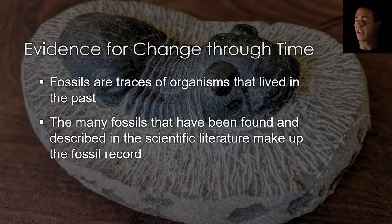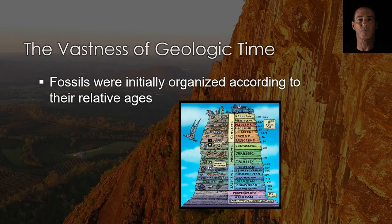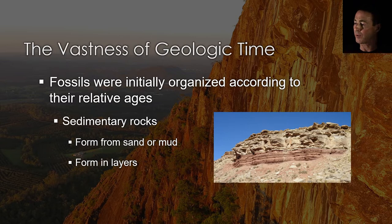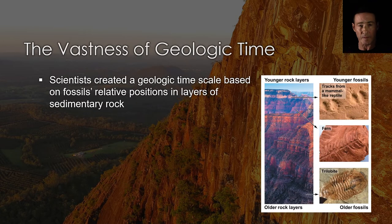Data in the fossil record ultimately came to support the hypothesis that species have changed through time, and data from species living today support the claim that they are modified forms of the ancient species found in fossils. Initially, fossils were organized according to their relative ages based on observations about rock formation. Sedimentary rocks form from sand or mud or other materials deposited in locations such as beaches or river mouths. Sedimentary rocks along with rocks derived from volcanic ash or lava are known to form in layers. Young layers are deposited on top and older layers below.